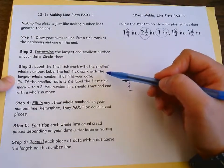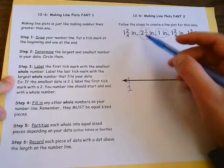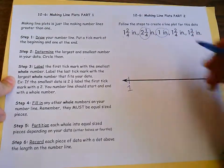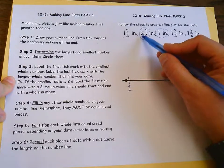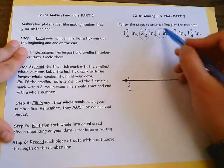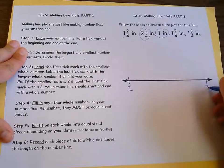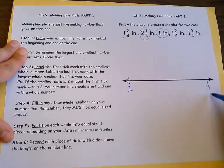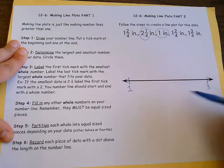And now I want to look at my largest number. I'm going to label the tick mark with the largest whole number that fits my data. So this is two and a fourth, so two wouldn't fit because this is more than two. So I'm going to bump up to three. So my number line is going to be between one and three.